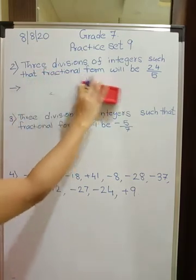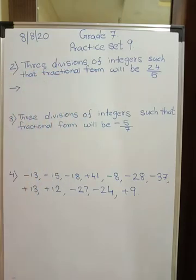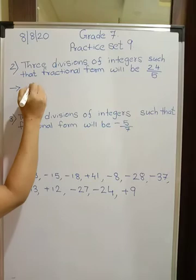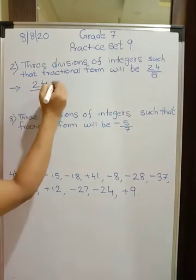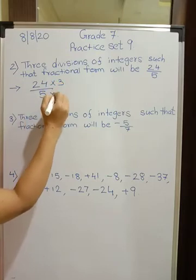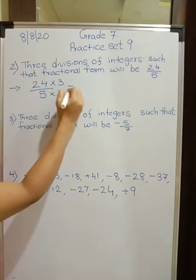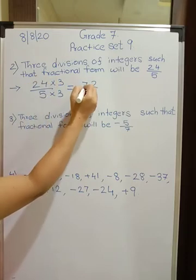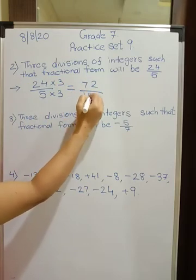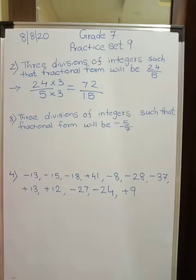Multiply the given fraction by same number, numerator also and denominator also. So take easy numbers, 24 upon 5. Now you can multiply by 3. How much you get? 4 threes are 12, 3 twos are 6 and 1 is 7, so 72 upon 15. This will also work out.